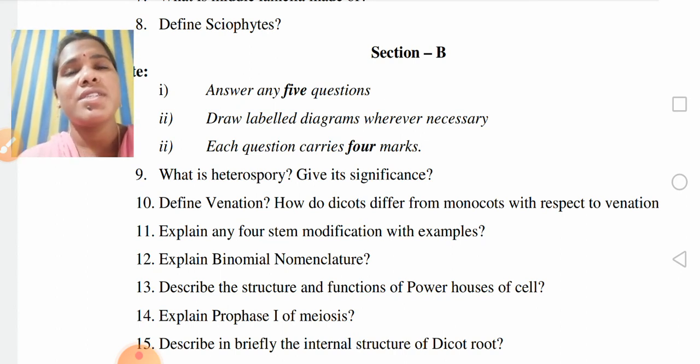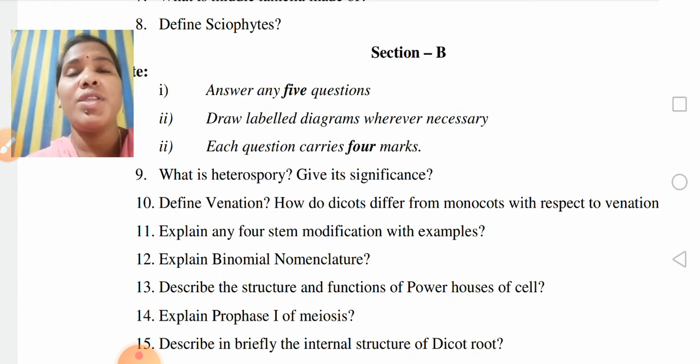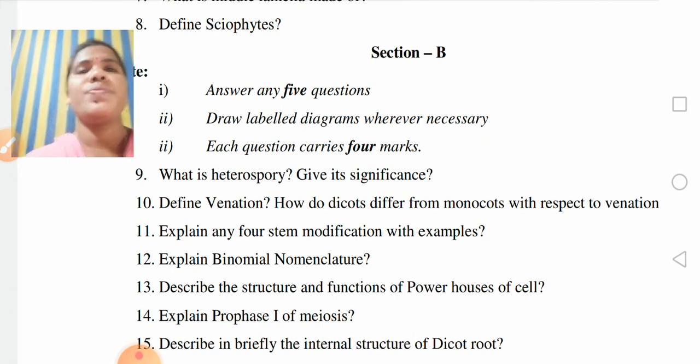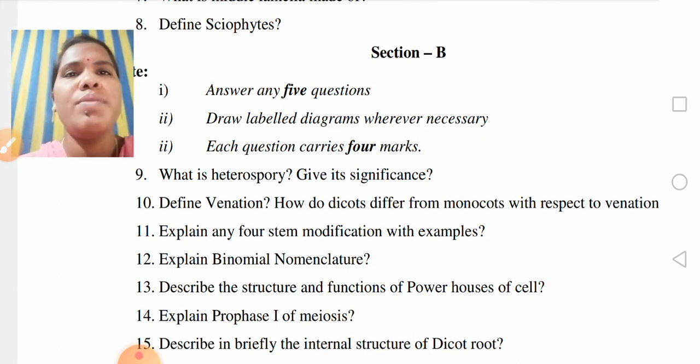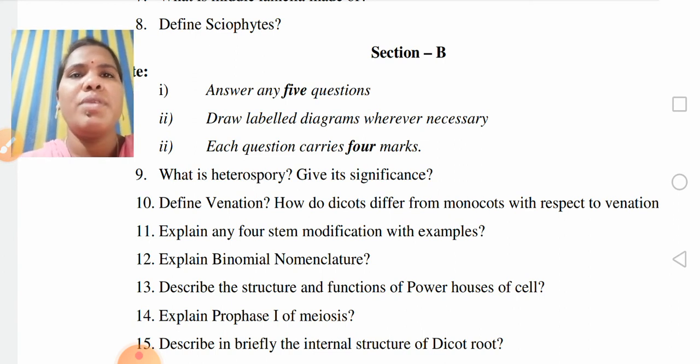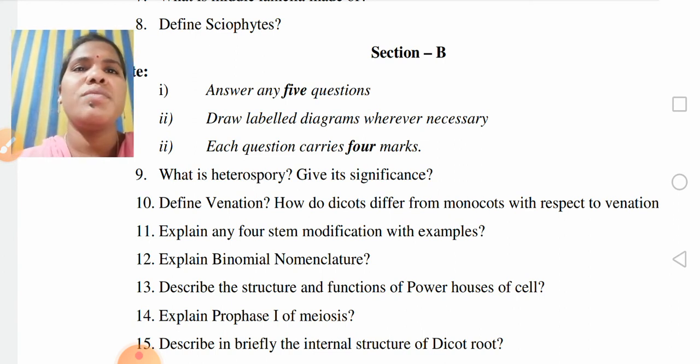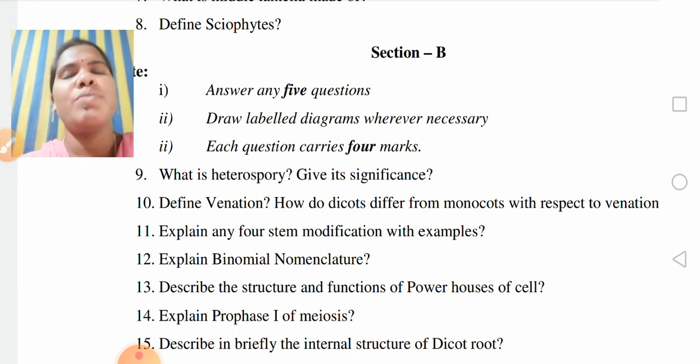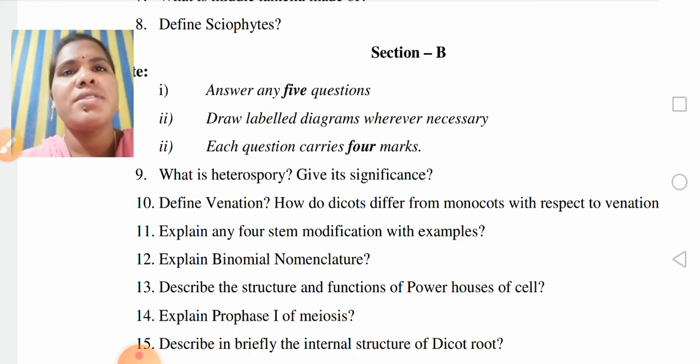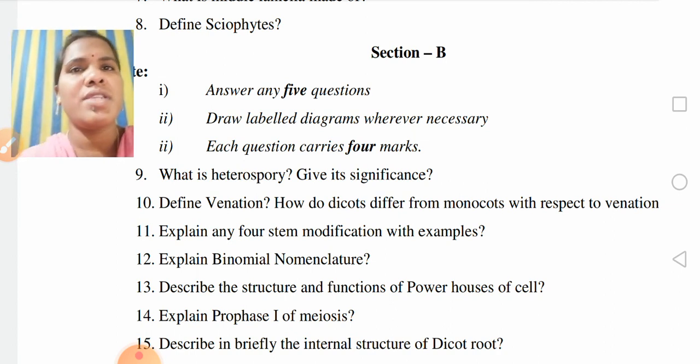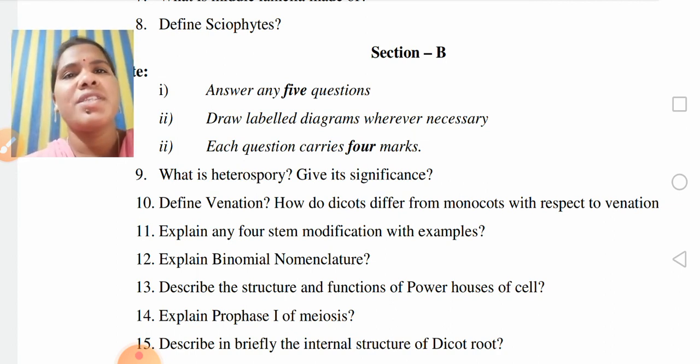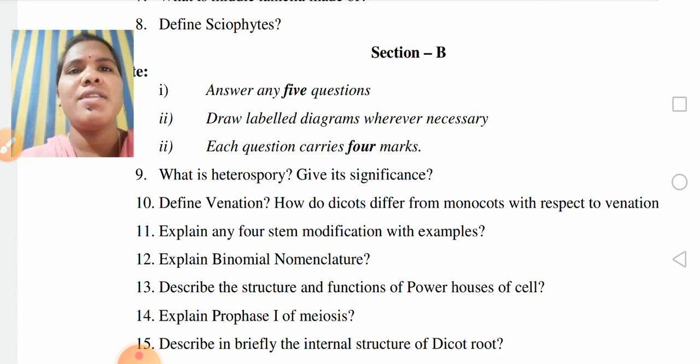So Section A has 5 marks, Section B has 20 marks, so overall 20 plus 5 is 25 marks. In Section A, 8 questions, Section B, 8 questions, so overall 16 questions. It may be physics or botany or zoology or chemistry. So there are 40 marks total.